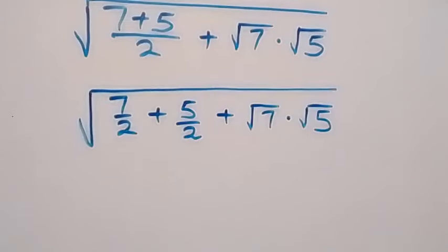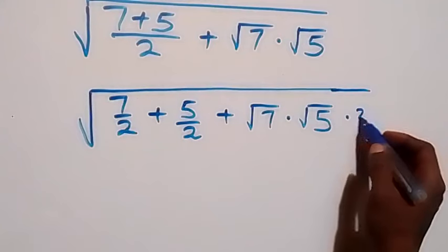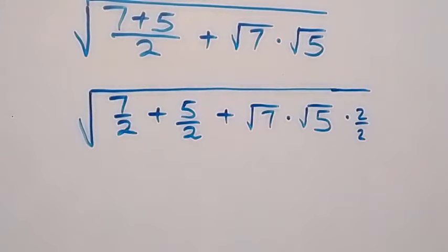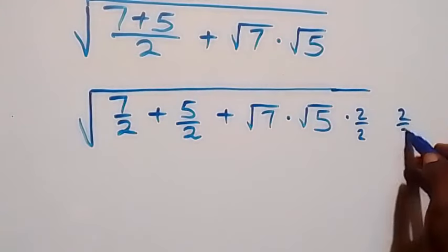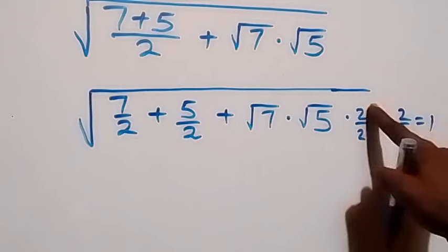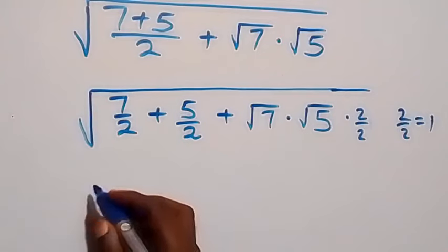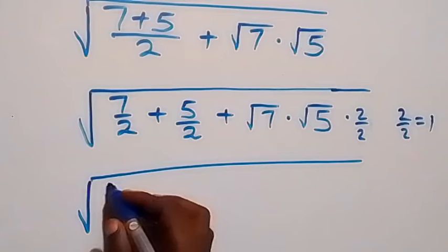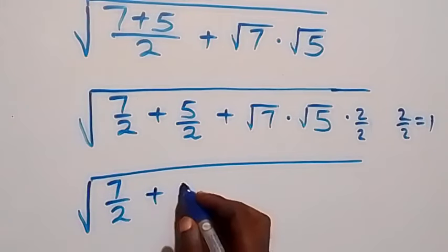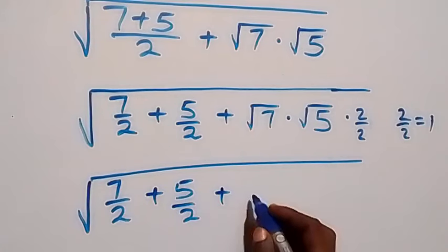From here we can multiply by 2 over 2, since 2 over 2 is the same thing as 1, so it's like we have not done anything special there. Then this becomes square root of 7 over 2 plus 5 over 2, then plus here we write it as 2 times root 7 times root 5.